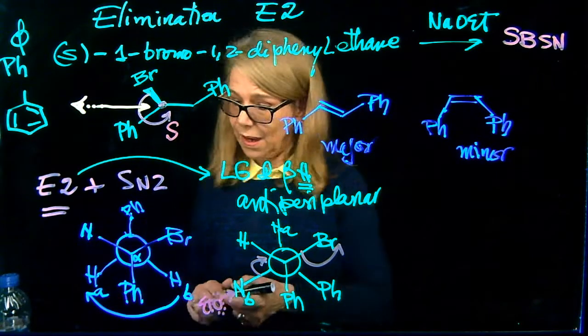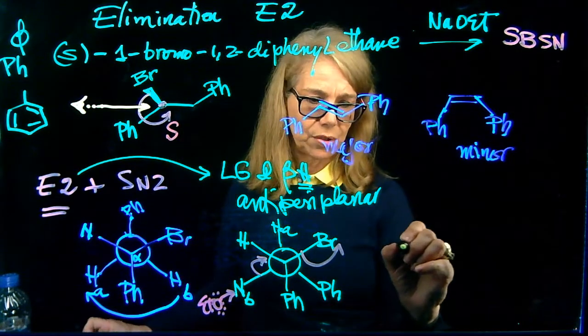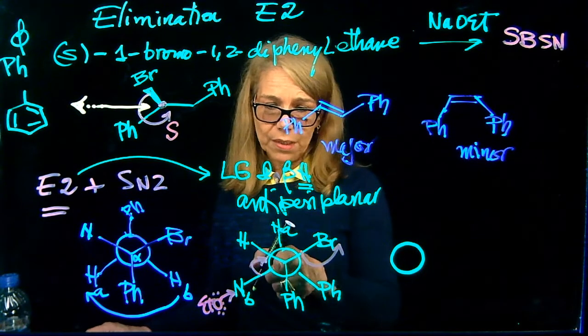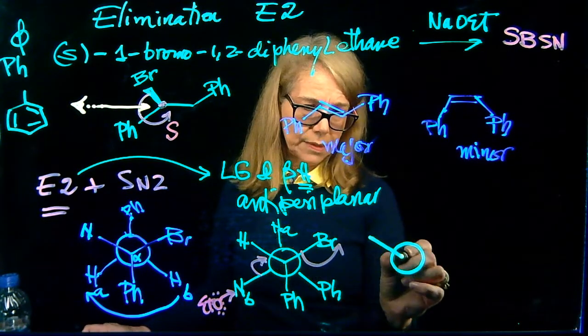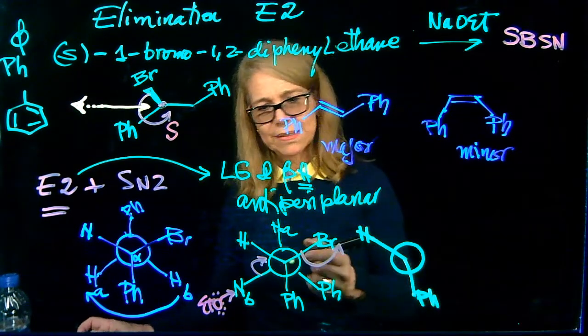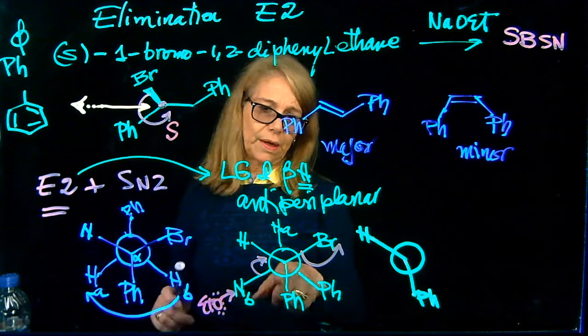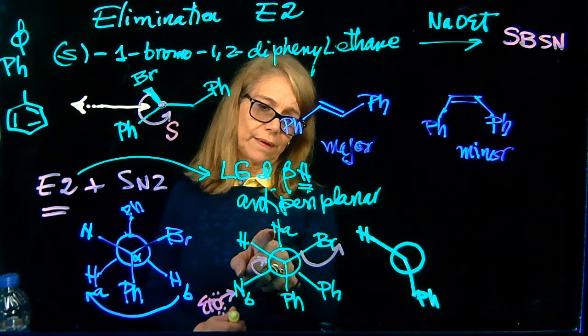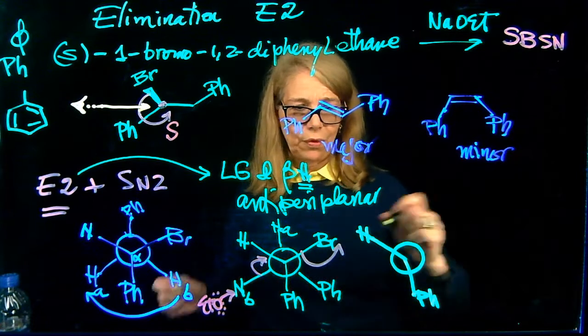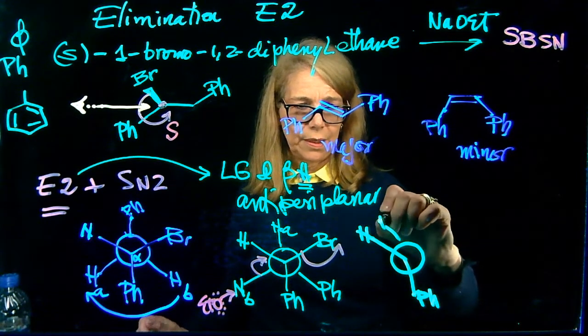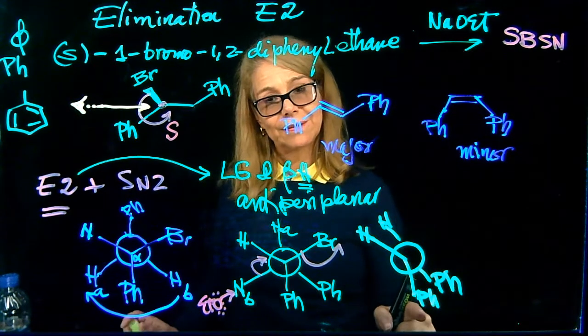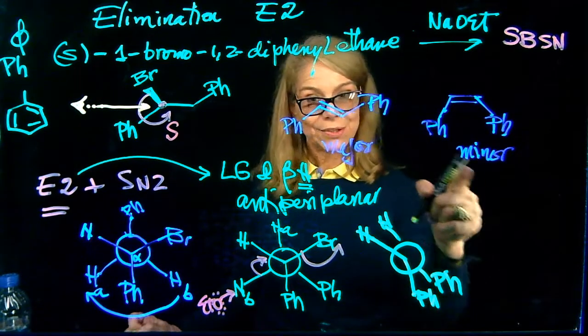you have the loss of leaving group. So what we have as a result is the following. Now I have in the front carbon, I still have this hydrogen and have a phenyl. Now let's see what is the carbon in the back. We will have this hydrogen and a phenyl.